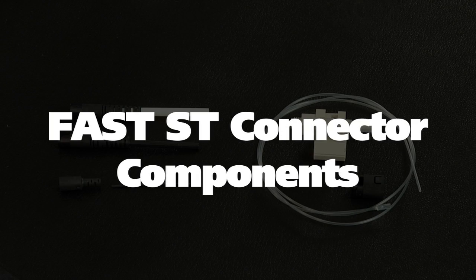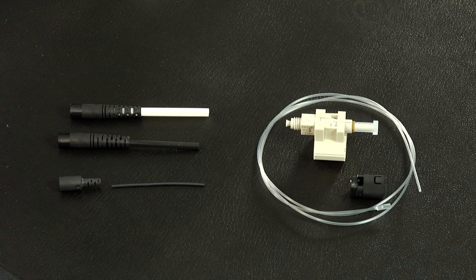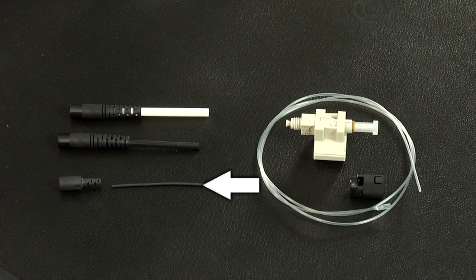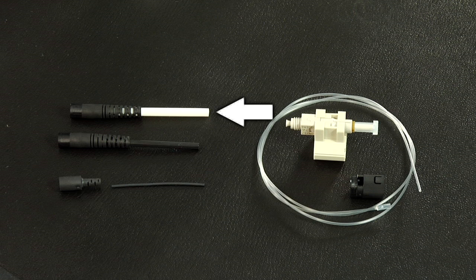The fast ST connector components: fast ST connector assembly, a 250 micron protective tube, a clear protective tube, a 3 millimeter boot, a 2 millimeter boot, and a 900 micron boot.